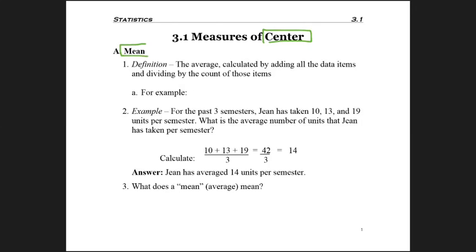The very first one is called a mean, and that's just another name for an average. Hopefully you're familiar with how to calculate an average. This is where you add up everything that's in your list and you divide by how many things are in your list.